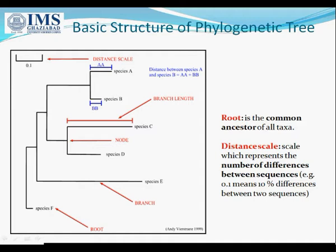The branch length is this one. The distance scale is given as 0.1 here, which represents the number of differences between the sequences. That is, 0.1 means 10% differences between two sequences.